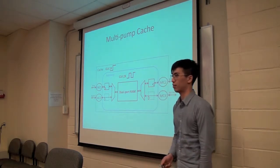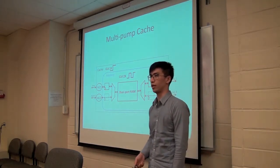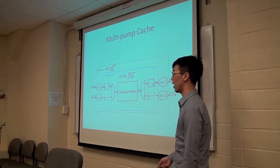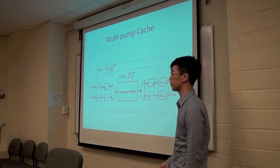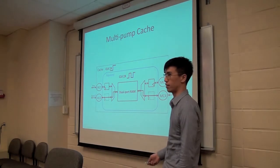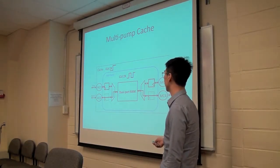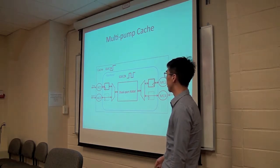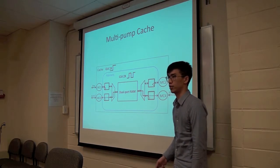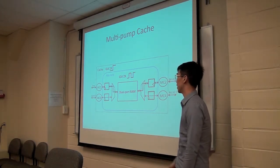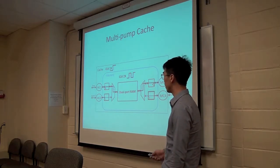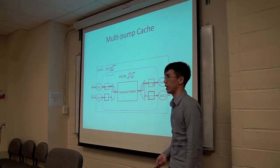Now the second approach is based on multi-pumping where the memory is pumped at twice the clock speed of the system as you can see here. This also shows a four-port cache where the four accesses are divided into two sets. So the first set accesses the memory directly in the first clock cycle of the fast clock, whereas the second set is registered. Now in the second clock cycle of the fast clock, the data will be returned which is saved into a different set of registers and now the second set accesses the memory. So at the end of the second clock cycle of the fast clock, all four accesses are done.